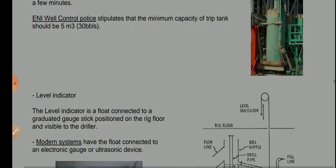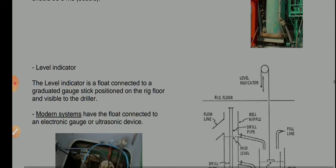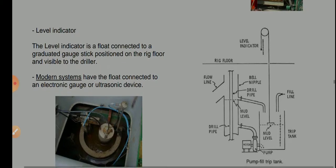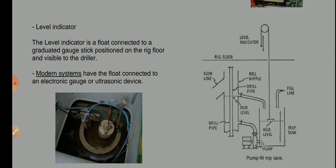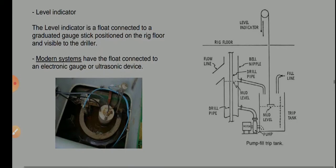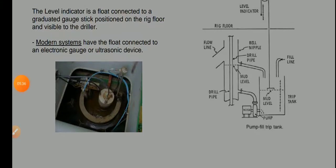There is a level indicator which shows how much mud is inside the trip tank. You should know at all times how much mud is inside the trip tank. The level indicator is a float connected to a graduated gauge positioned on the rig floor and visible to the driller. Modern systems have a float connected to an electronic gauge or ultrasonic device, using a level sensor.